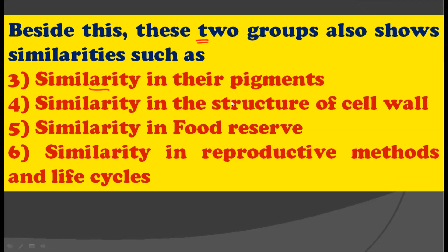Besides this, there are other characters found similar in both groups: similarity in their pigments, similarity in the structure of the cell wall, same food reserves, and similarity in the reproductive methods and life cycle of both bryophytes and pteridophytes. All these points favour that bryophytes may have descended from pteridophytes.